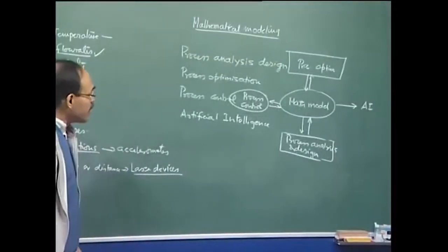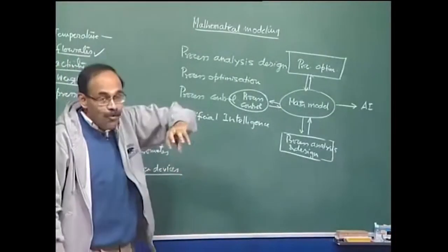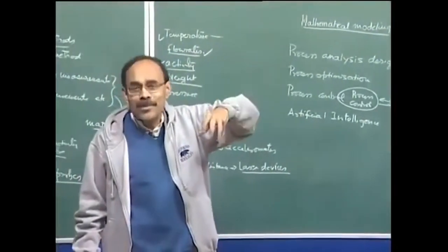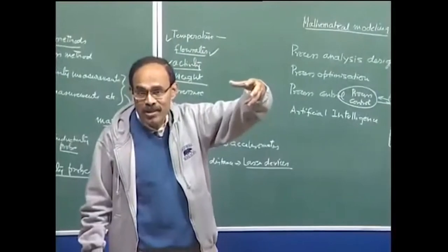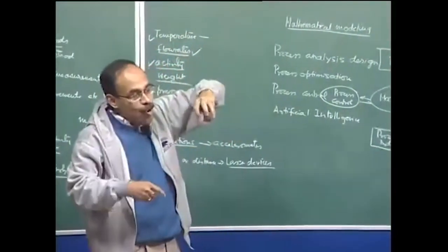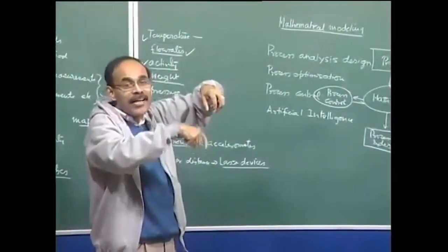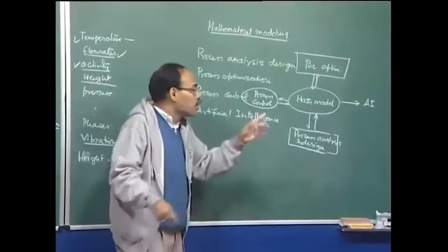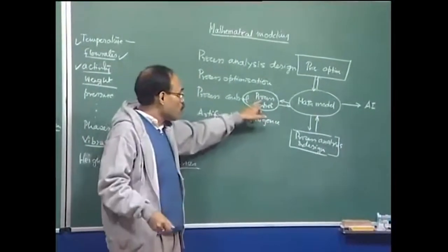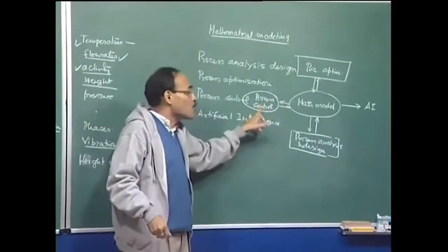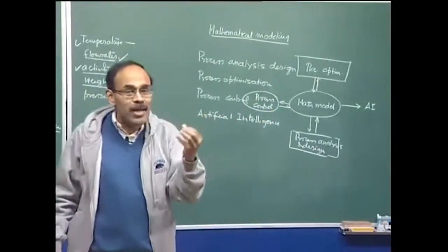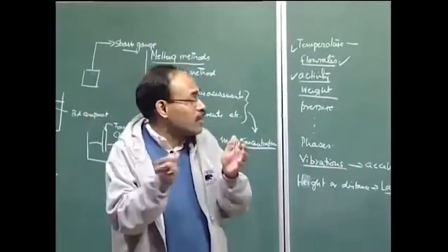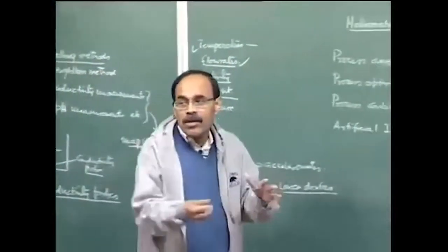Process control models are mathematical models used for control, and these need to be very simplistic because the model has to perform in a very small or realistic time frame. During rolling, the roll gap is to be changed dynamically — what controls it? There are control algorithms, control mathematical models. Process control is done in an online fashion, interacting on a one-to-one basis in real time.